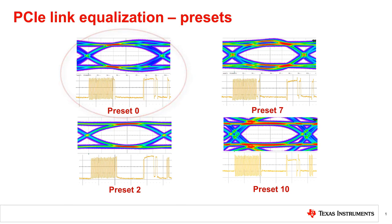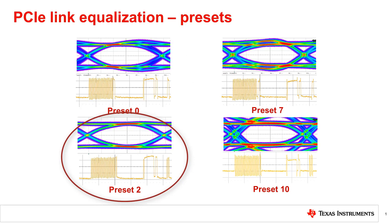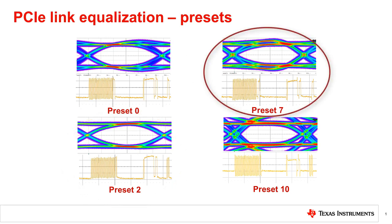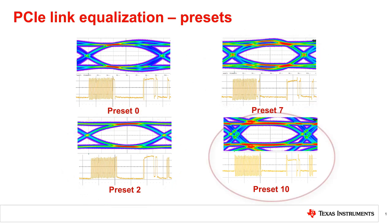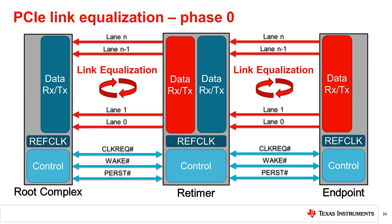These configurations are aptly called presets. For PCIe Gen 3 and Gen 4, there are 11 presets numbered from 0 to 10 that may be used, each with its own unique signal characteristics. The preset values for each port are negotiated through link EQ until the ideal preset is chosen. The downstream port begins the link EQ process by sending its desired transmitter preset values for each lane to the upstream device. This is referred to as phase 0 of link EQ.